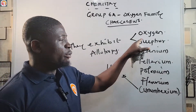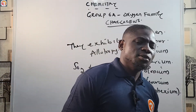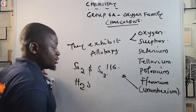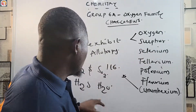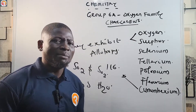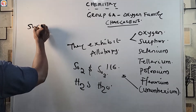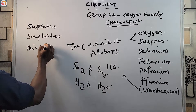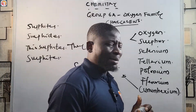Oxygen and sulfur exhibit allotropy and can also combine with each other: sulfur combines with oxygen to form SO2 and SO3. They also combine with hydrogen — sulfur combines with hydrogen to form H2S (hydrogen sulfide), and oxygen combines with hydrogen to form H2O (water). Oxygen reacts with many elements to form oxides, while sulfur forms many compounds such as sulfates, sulfites, and thiosulfates.